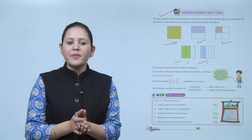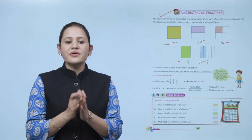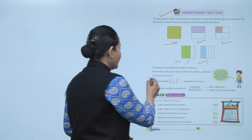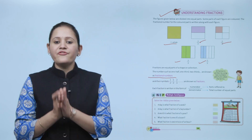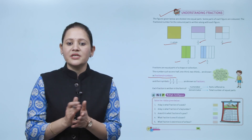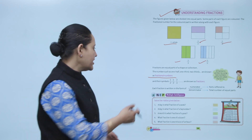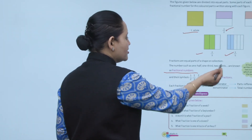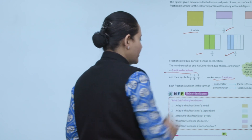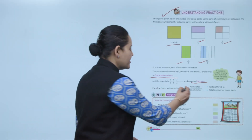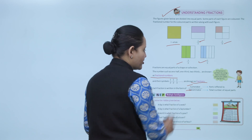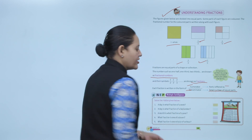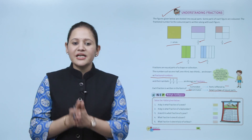Fractions are equal parts of a shape or collection. Numbers such as one half, one third, two third are known as fraction numbers. A fraction is written using two numbers called the terms. One half is written as 1 by 2, one third as 1 by 3, two third as 2 by 3. In a fraction, the upper part is the numerator and the lower part is the denominator. The numerator is the part referred to and the denominator is the total number of equal parts.